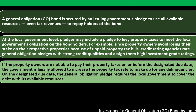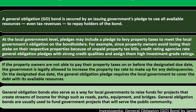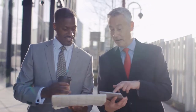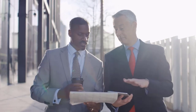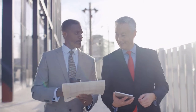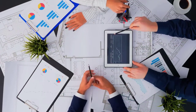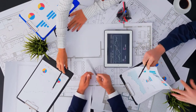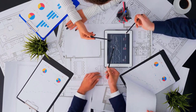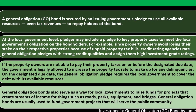General obligation bonds also serve as a way for local governments to raise funds for projects that create streams of income — for things such as roads, parks, equipment, and bridges. State and local governments are typically responsible for these kinds of things, unless you're talking about interstate commerce, which can involve the federal level. The federal tax system is primarily an income tax, while at the state and local level there are multiple systems — which might include property taxes among others.